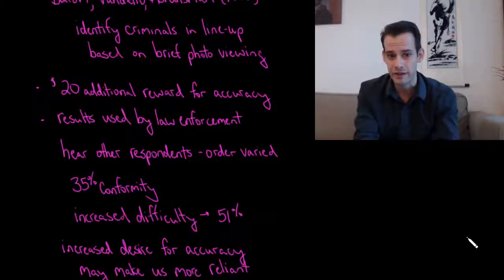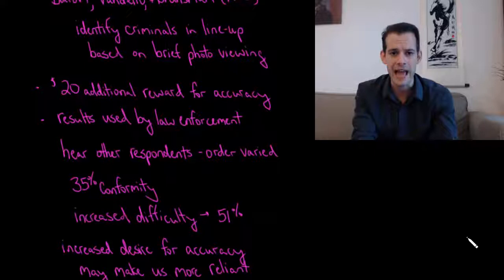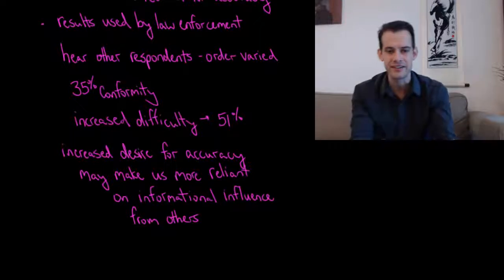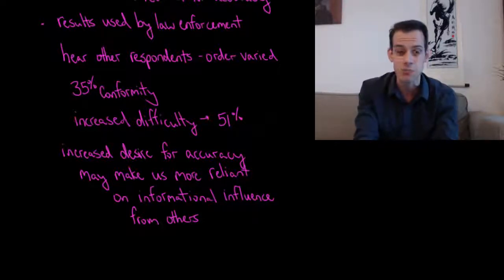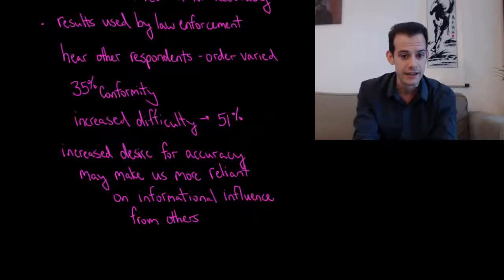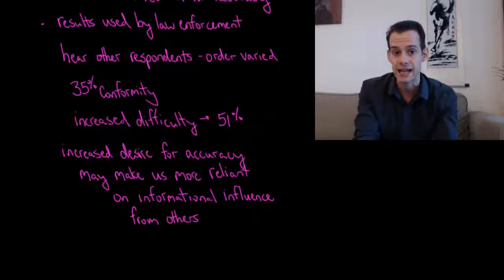They thought, what if it's really difficult to identify the suspect in the lineup? And the way that they did this was they showed the photograph very, very briefly. And the people in the lineup were wearing different clothing than in the photographs. So it was very hard to identify the correct person. And what they found is in this case, conformity actually increased. So what does this mean? Well, this suggests that when we have a desire to be accurate, and we want to do a good job, and we think it's important that we get the correct answer, then this might actually make us more reliant on the informational influence that we're getting from others. In other words, if we really want to get the right guy, and we just heard four other people say that it's guy number three, and we really want to make sure that we're right, we might actually use that informational influence more than we would if we didn't think the task was as important, or if we had gotten a better chance to see the guy in the photograph earlier.